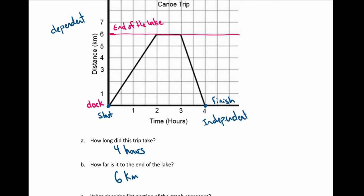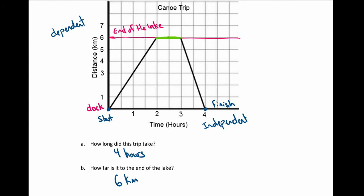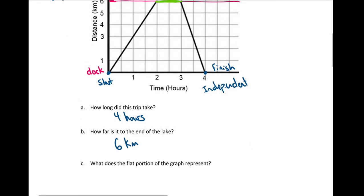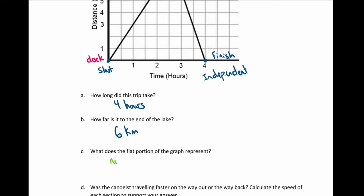What does the flat portion of the graph represent? The flat portion is this top part — it's a horizontal line. The slope of a horizontal line equals zero. In the context of distance and time, a slope of zero means the distance is not changing over time, so she's staying in one spot. She's not moving — essentially stopped.